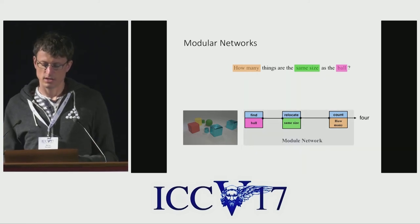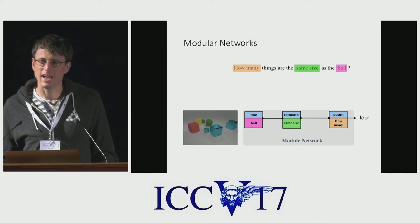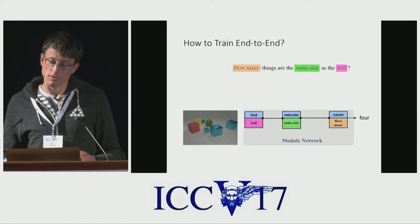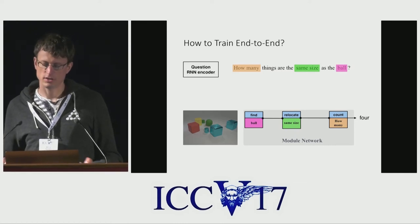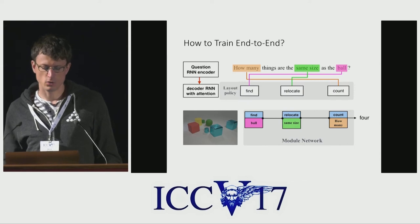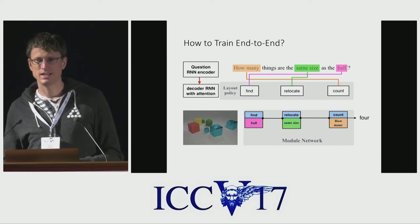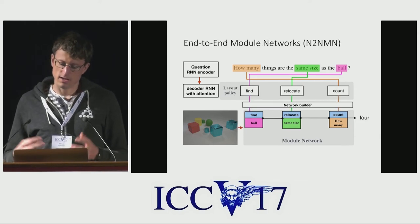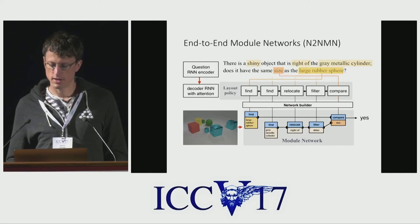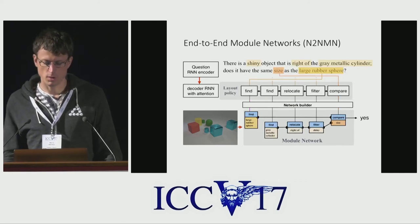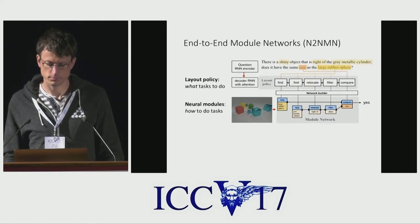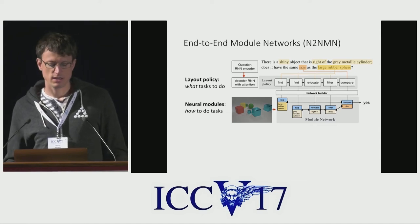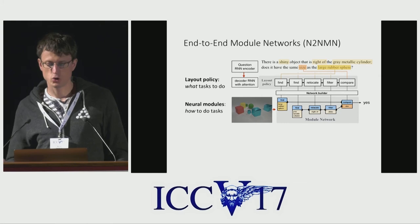Now the question is how can we predict this module layout from the question? We want to do that end-to-end, in contrast to prior work. We encode the question using a question RNN encoder, and then with a decoder with attention we predict the networks one step at a time. Finally, a network builder constructs the network, working for both simple and more complex networks. We have two components: a layout policy which tells us what tasks to do, and neural modules which tell us how to do those things.